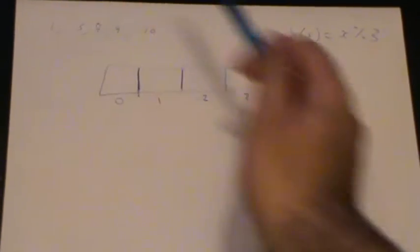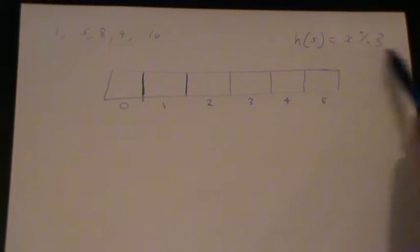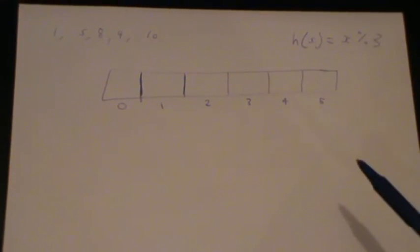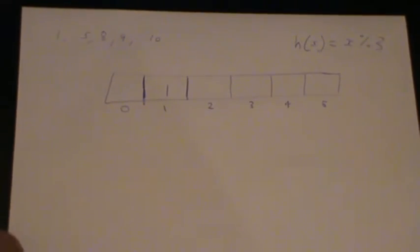Let's say we insert 1, so we just use the hash function, we'll get h of 1, so that's 1 mod 3, which is just 1, and we'll just insert it straight here. So we've inserted 1.